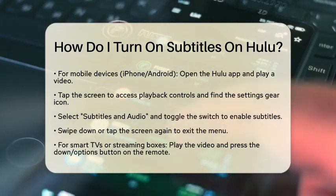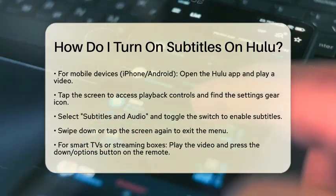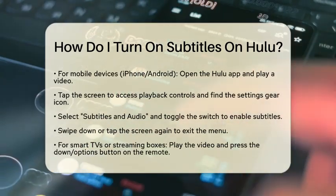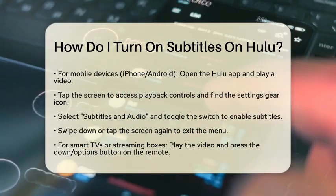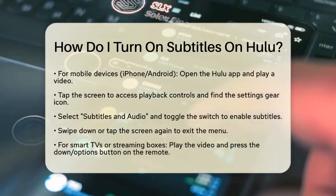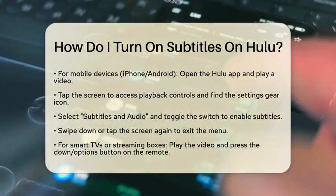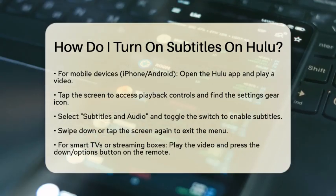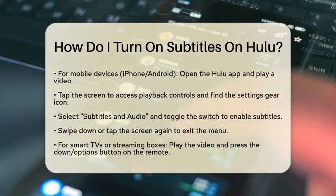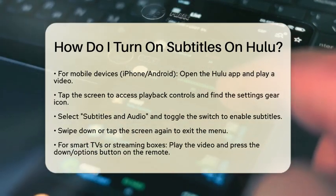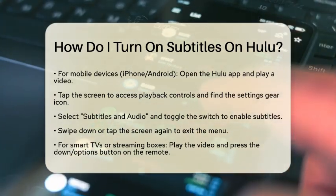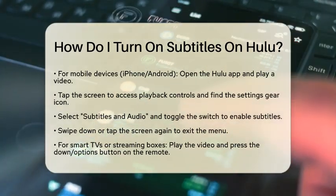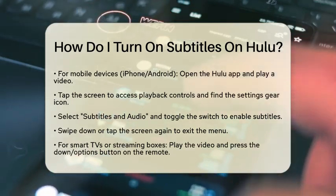For mobile devices, whether you are using an iPhone or an Android phone, open the Hulu app and start playing a video. Tap the screen to reveal the playback controls. You will again see the settings gear icon. Tap on it and you will find an option labeled subtitles and audio. Toggle the switch to enable subtitles and select your desired language. Once you are done, swipe down or tap the screen again to exit the menu.